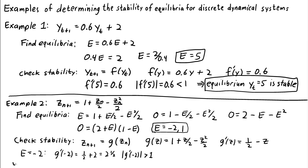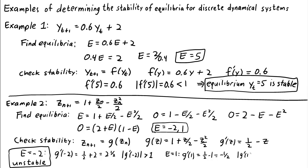We conclude that the equilibrium e = −2 is unstable. For e = 1: g'(1) = 1/2 − 1 = −1/2. The absolute value of the derivative at equilibrium 1 is 1/2, which is less than 1, so the equilibrium e = 1 is stable. So the dynamical system had two equilibria: e = −2 is unstable, and e = 1 is stable.